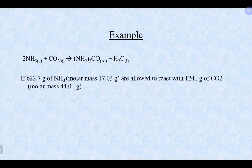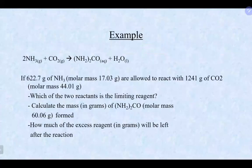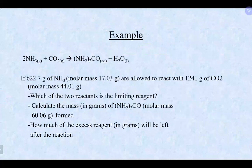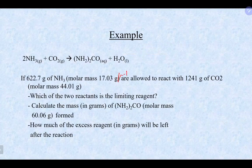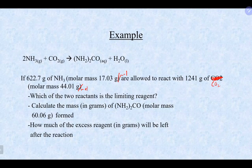Let's try another one. If we take 622.7 grams of NH3 (molar mass 17.03 g/mol) and react it with 1241 grams of CO2 (molar mass 44.01 g/mol), which is the limiting reagent? Calculate the mass of product (molar mass 60.06 g/mol) and how much excess reagent will be left over.